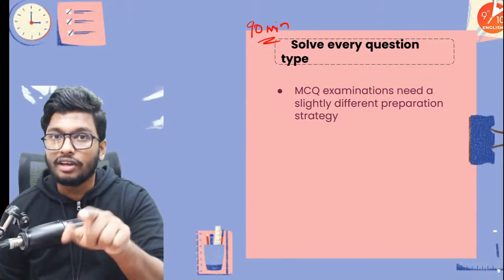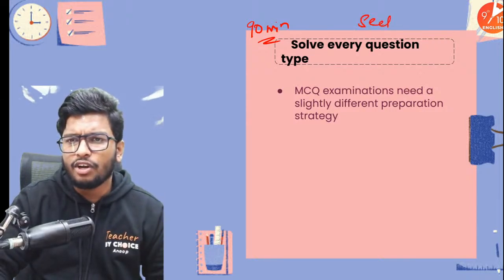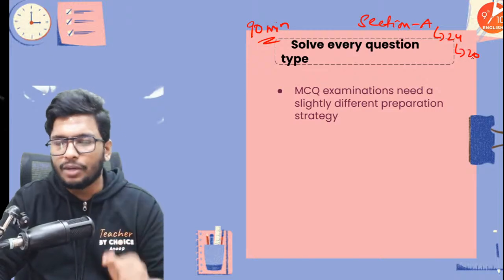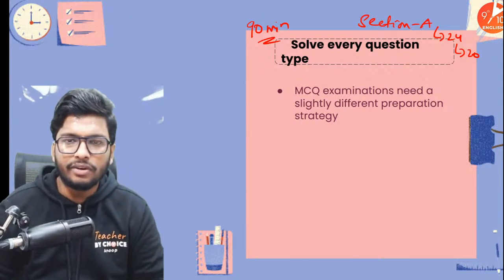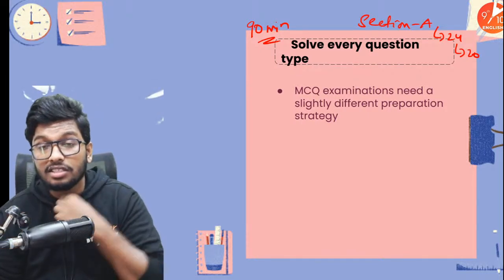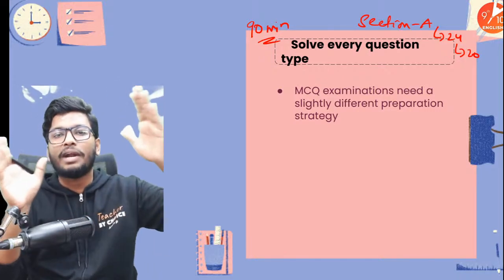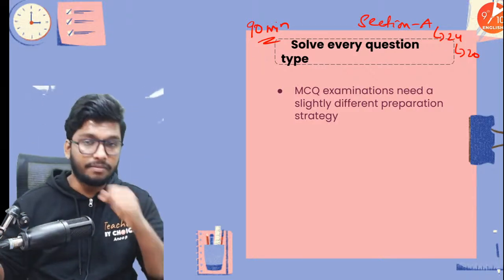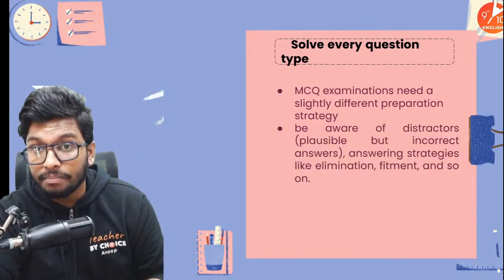In Section A, for example, there are 24 questions given but you only have to attempt 20. Whatever the first 20 questions you attempt, those are what the board will consider — even if you attempt all 24. So you have to be very smart about which questions you're going to attempt in your examination.